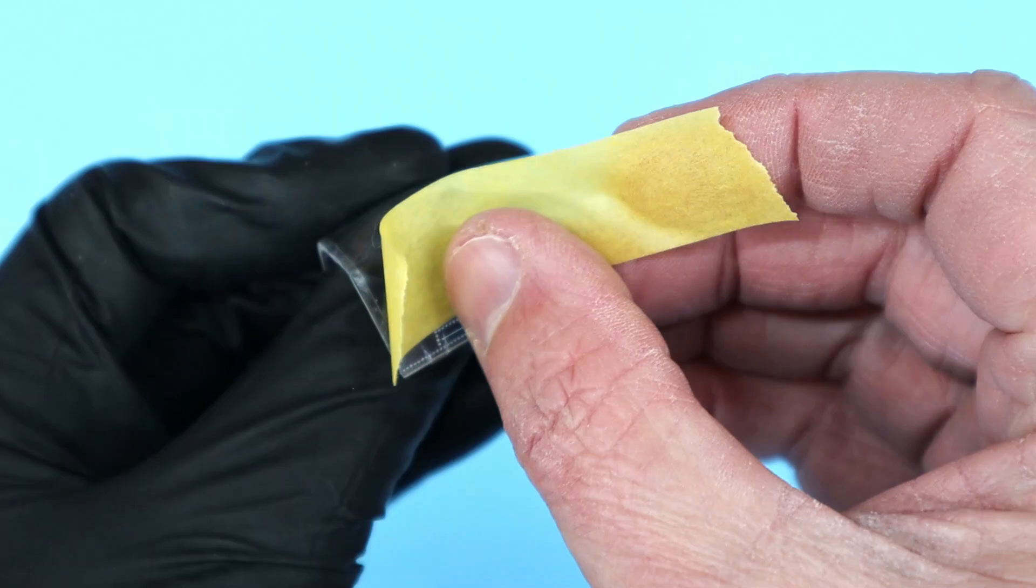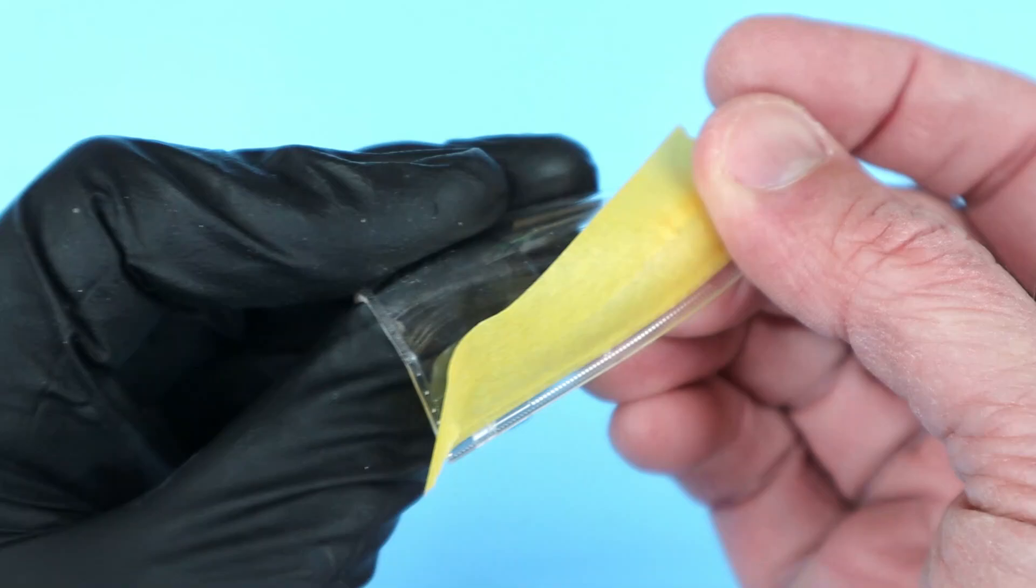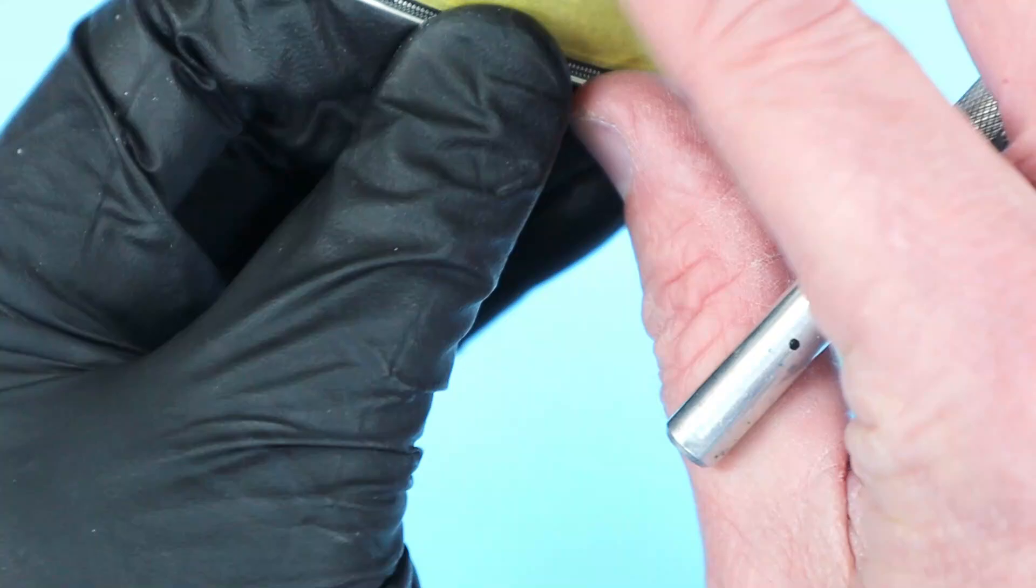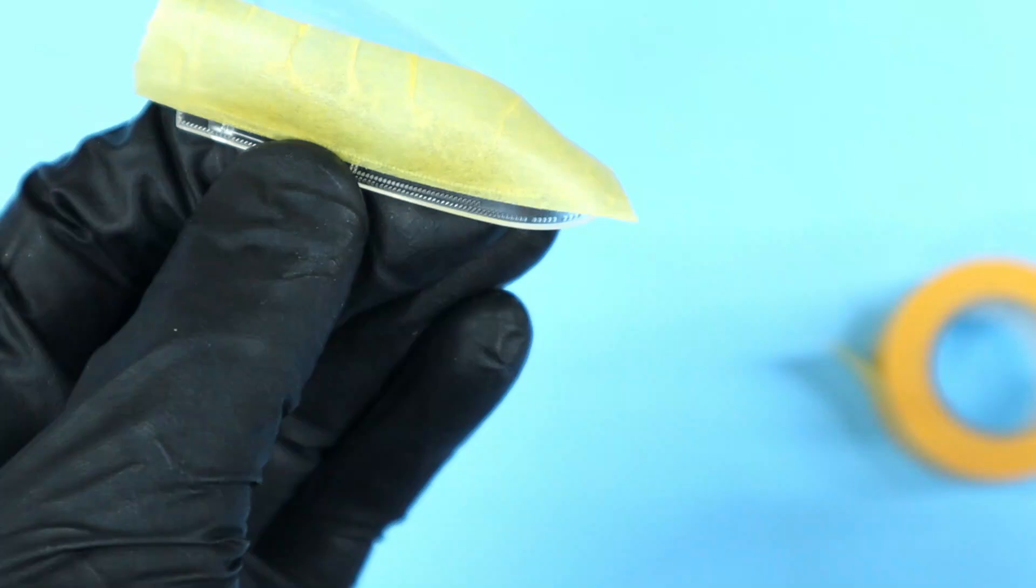The first step to masking your clear part is to apply the Tamiya low tack tape to the top side of the canopy. To help the tape wrap around the compound curves of the canopy, I use my knife to cut slits in the tape and then fold each section over. I burnish the tape down with my finger to get a good seal on the clear parts.